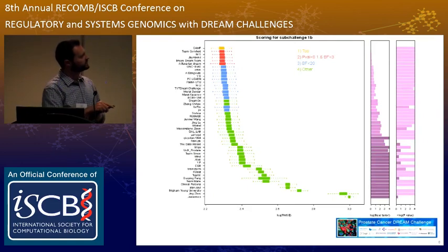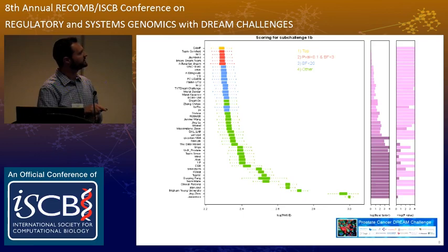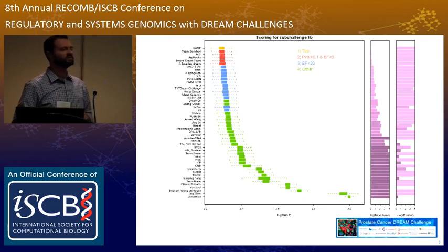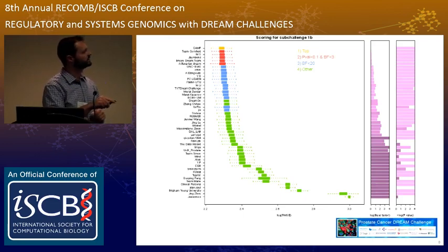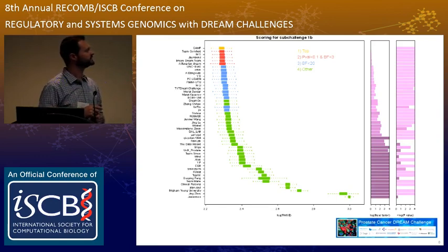These are the results for 1B, showing a distribution of root mean squared error. In this case, we didn't have a very clear top winner — we had a group of winners that were top performers under our scoring criteria.